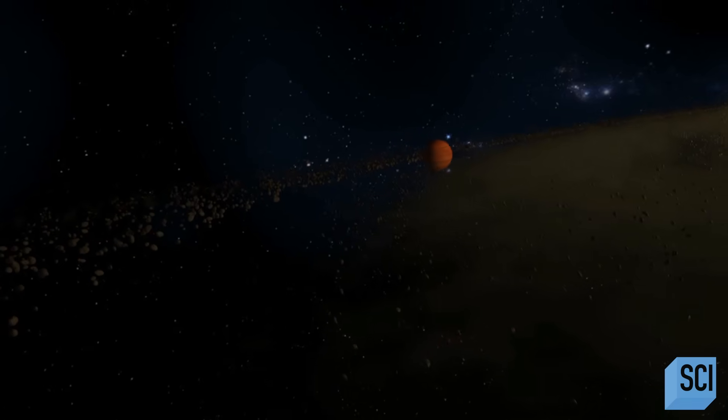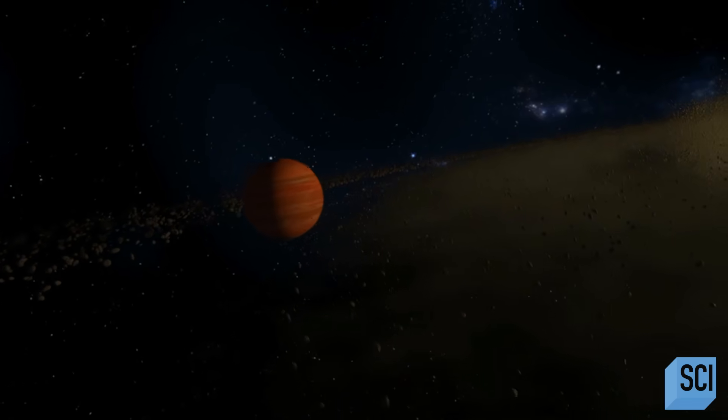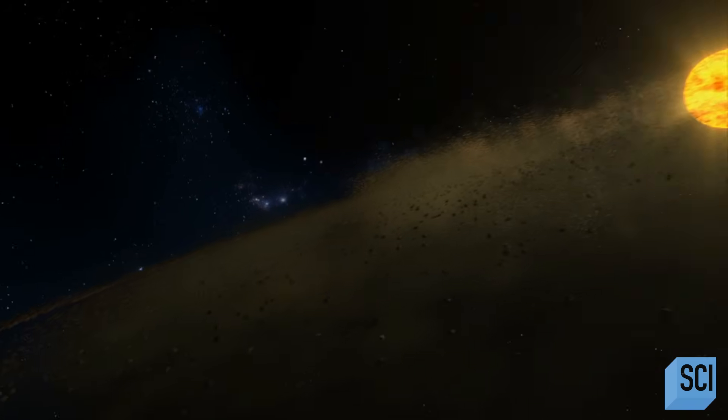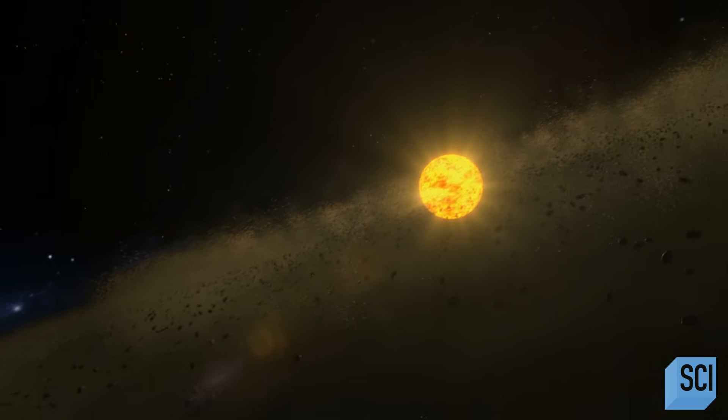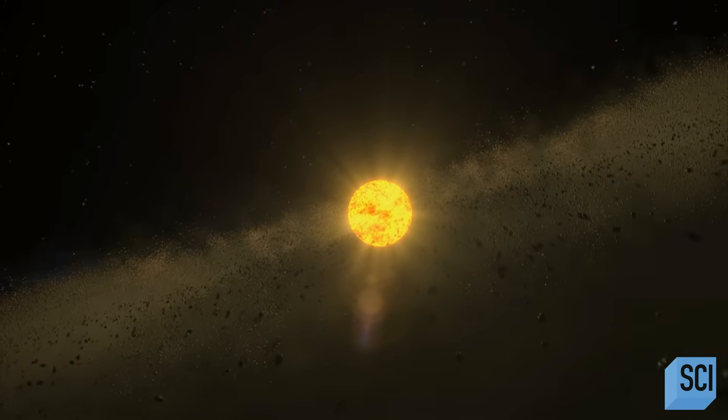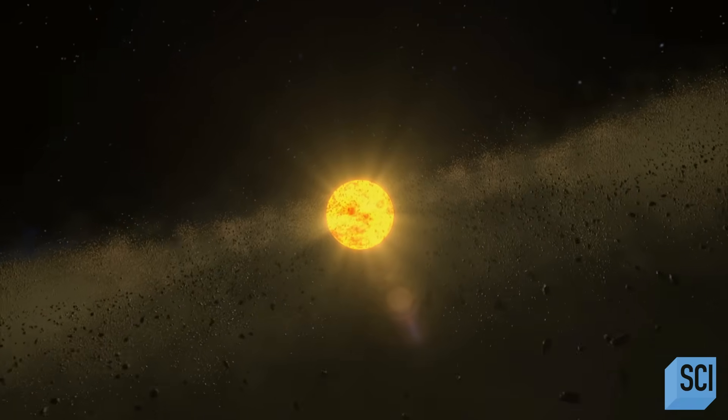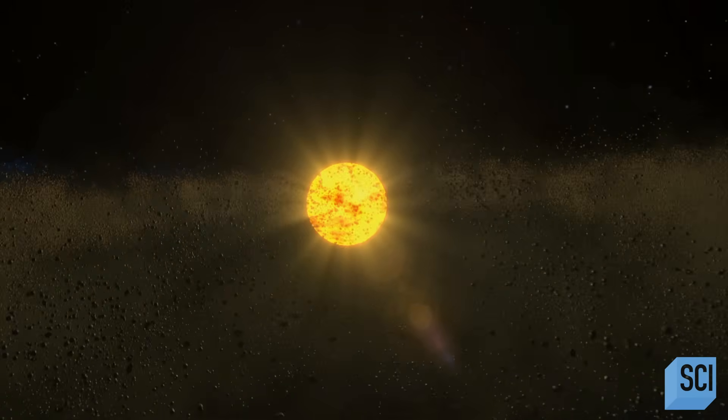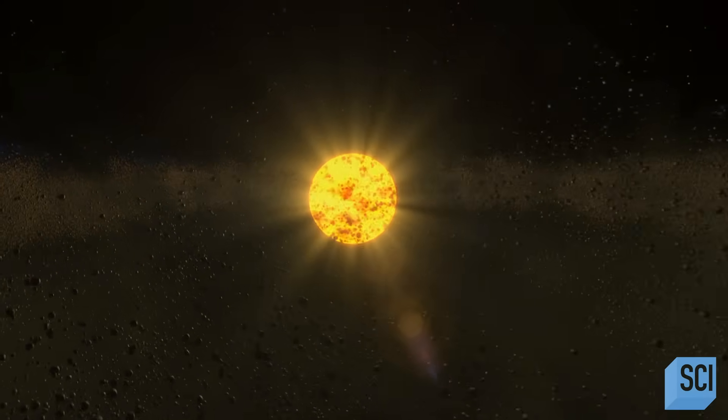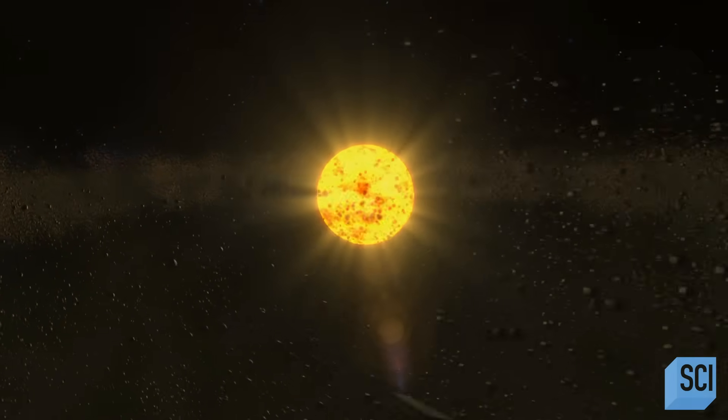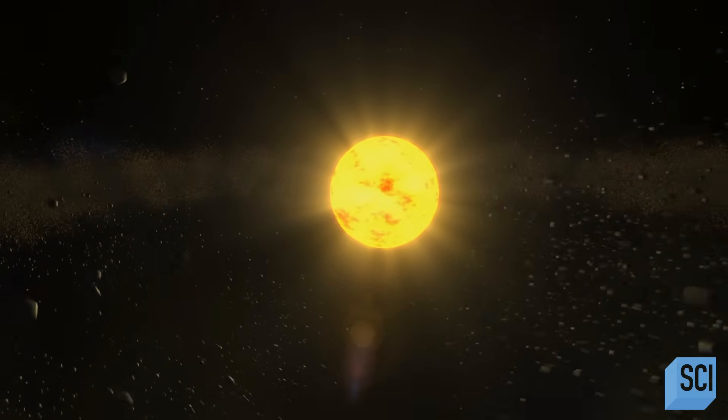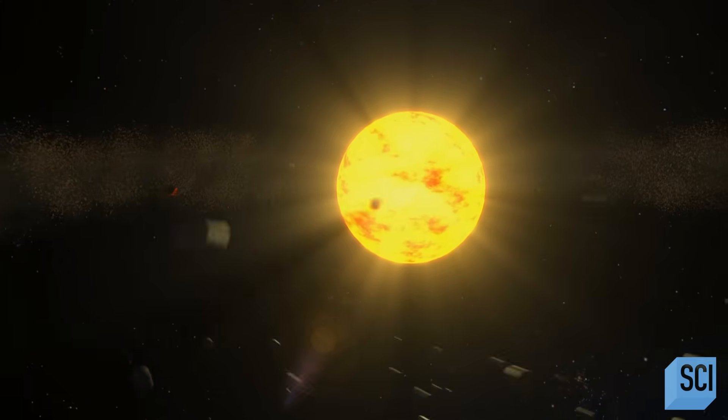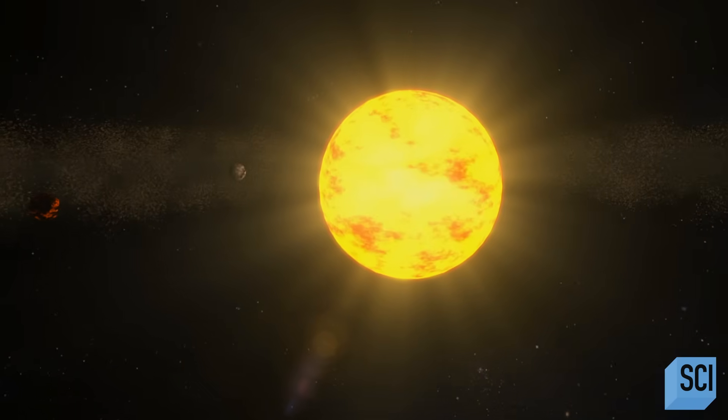This is the theory. 4.5 billion years ago, Jupiter spirals inwards through a young solar system. Its immense gravity smashes the forming planets together and snowplows their corpses towards the Sun, piling up a gigantic ridge of rubble. The pile of rubble meets the family of super-Earths. It disrupts their orbits.